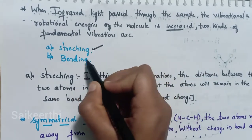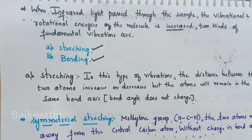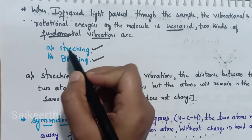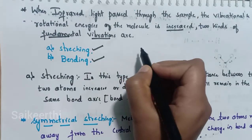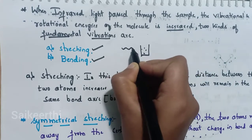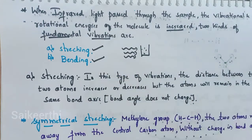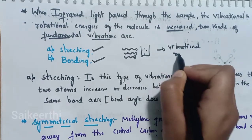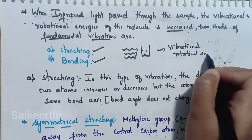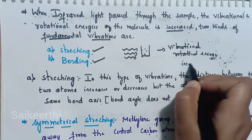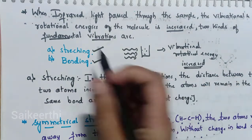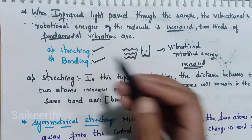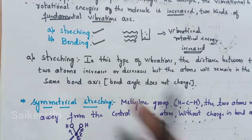Two kinds of fundamental vibrations are stretching vibrations and bending vibrations. When infrared radiations are passed through the sample, the vibrational and rotational energy of the molecule increases, and these two kinds of fundamental vibrations — stretching and bending — are produced.